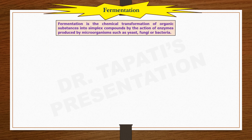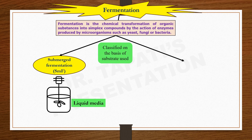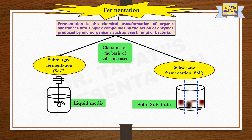Fermentation is the chemical transformation of organic substances into simpler compounds by the action of enzymes produced by microorganisms like yeast, fungi, or bacteria. Although specific fermentation procedures adopted by manufacturers vary to a certain degree, there are only two principal methods of cultivation known as submerged fermentation and solid state fermentation. Both processes are used for the commercial production of enzymes.